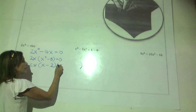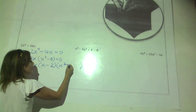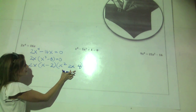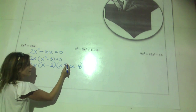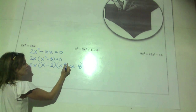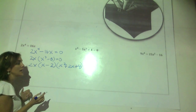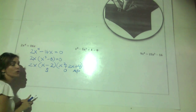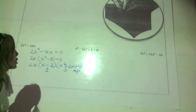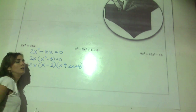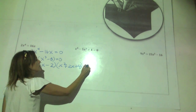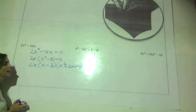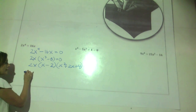The next example is: 3x cubed minus 12x equals negative 2x squared plus 8. We have a polynomial with mixed degrees on two sides of the equation. Always move everything to one side. We push it all to the left and put it in standard form in one step — adding the 2x squared and subtracting the 8 — to get: 3x cubed plus 2x squared minus 12x minus 8 equals zero.